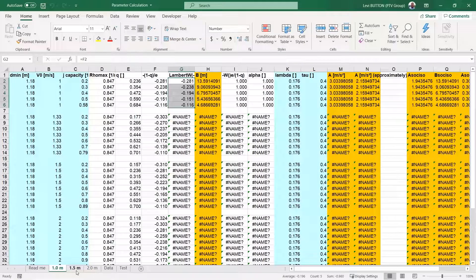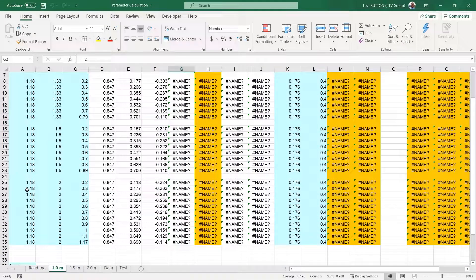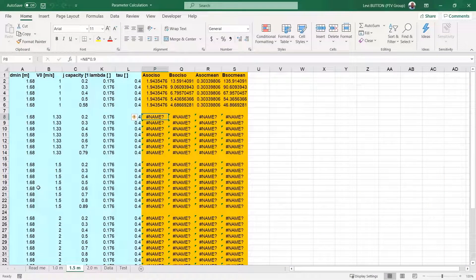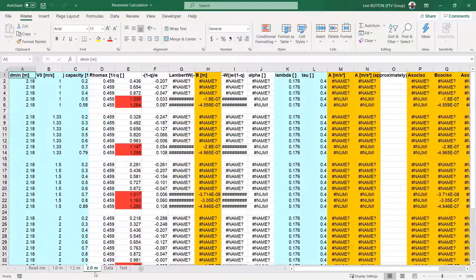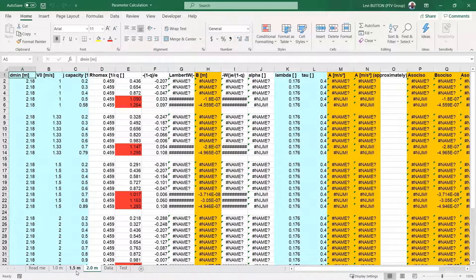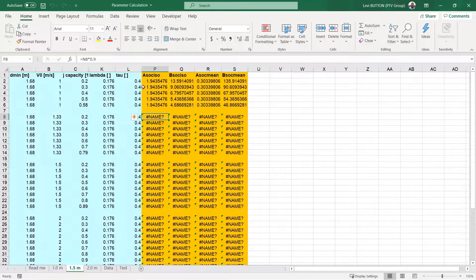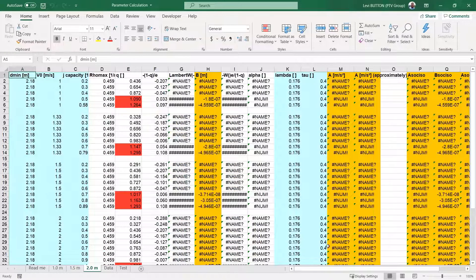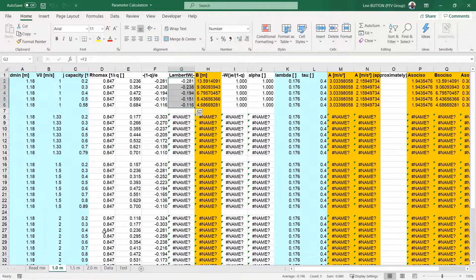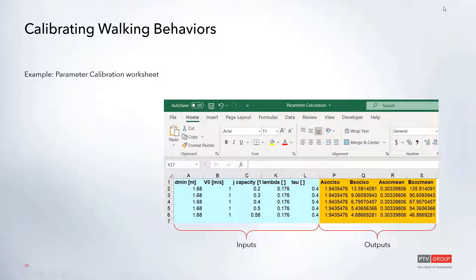We have a few different sets of data for different distances: one meter, 1.5 meters, two meters, and seeing what the different parameters are looking like as they're coming through the data set. We'll provide this worksheet with the other example files to help you with your walking behaviors.